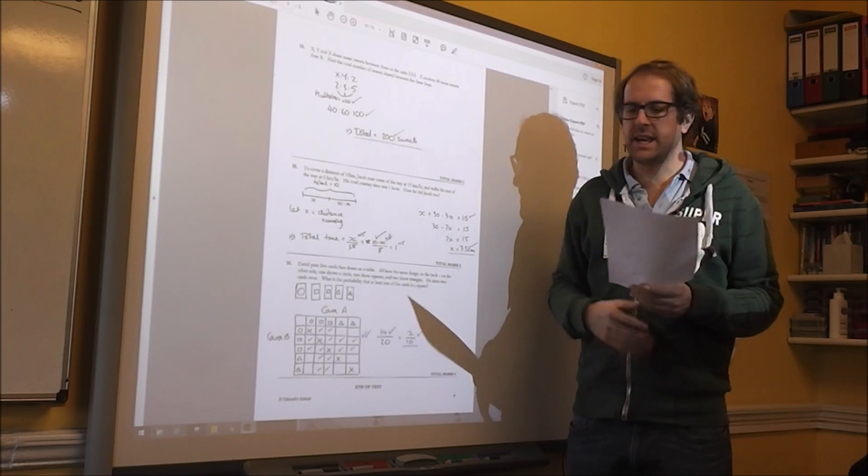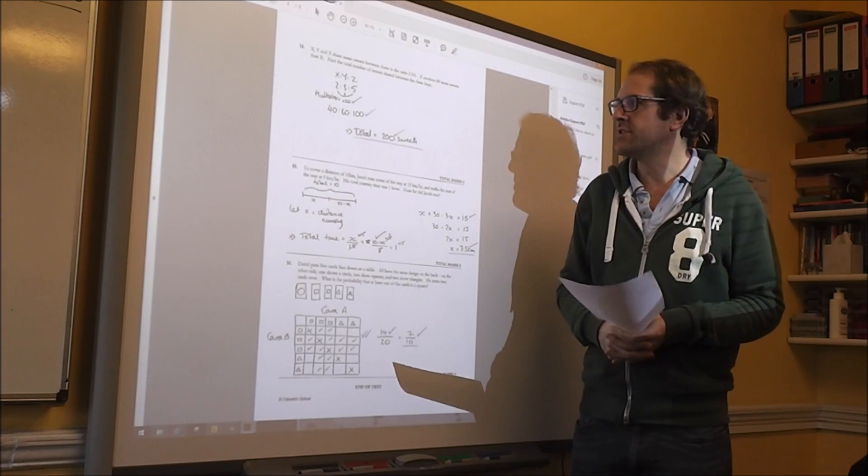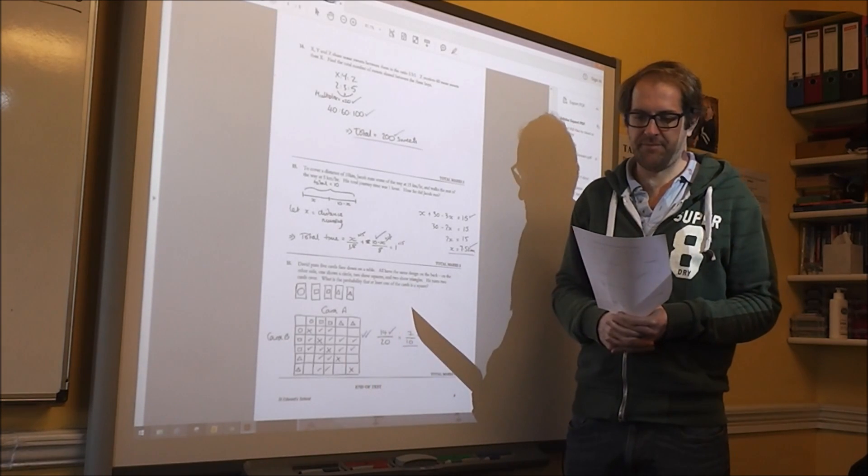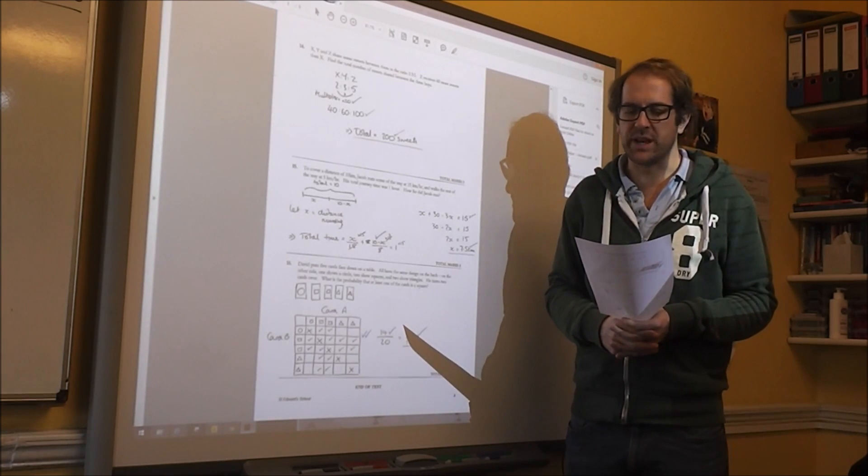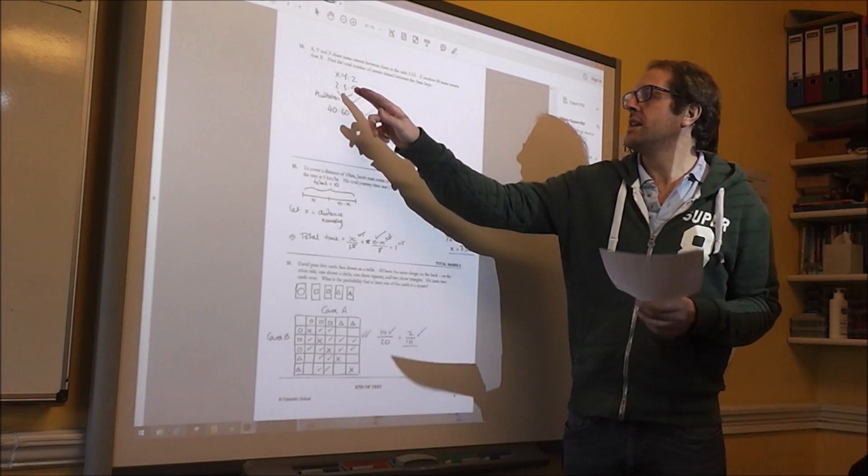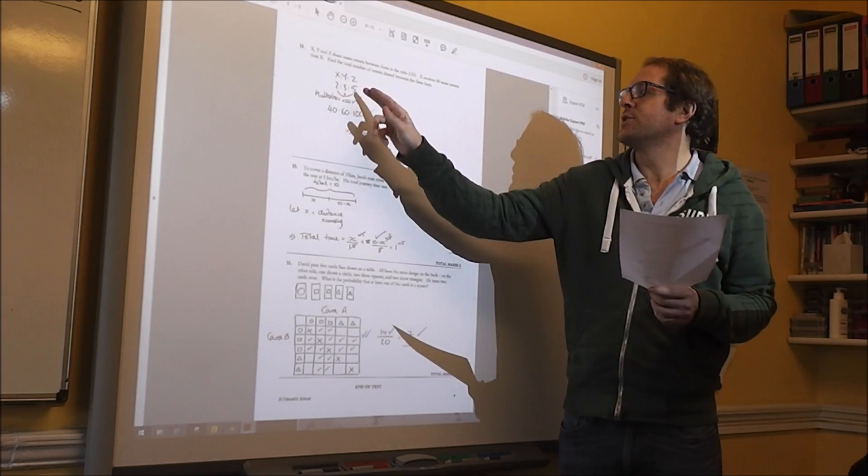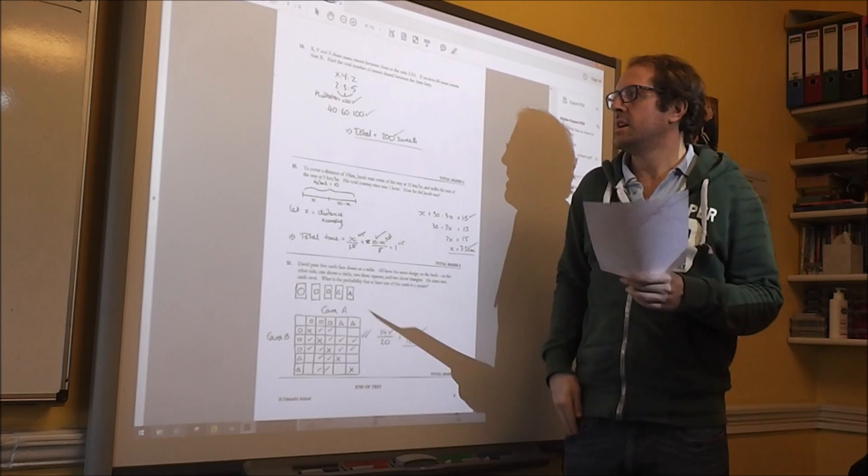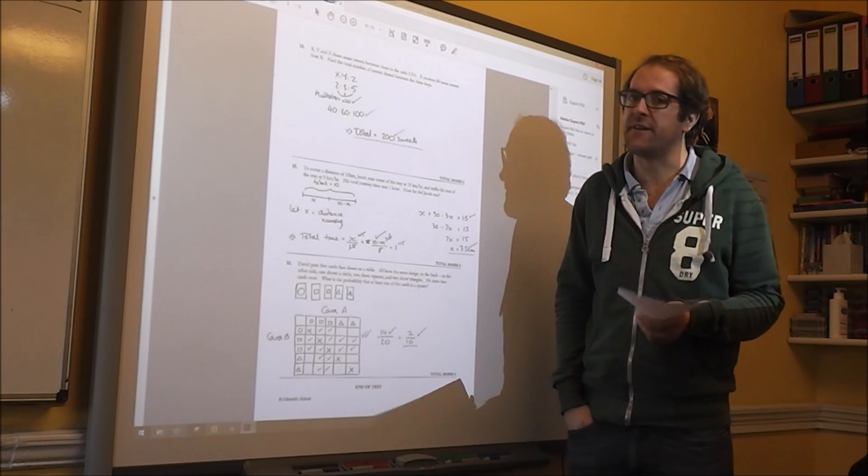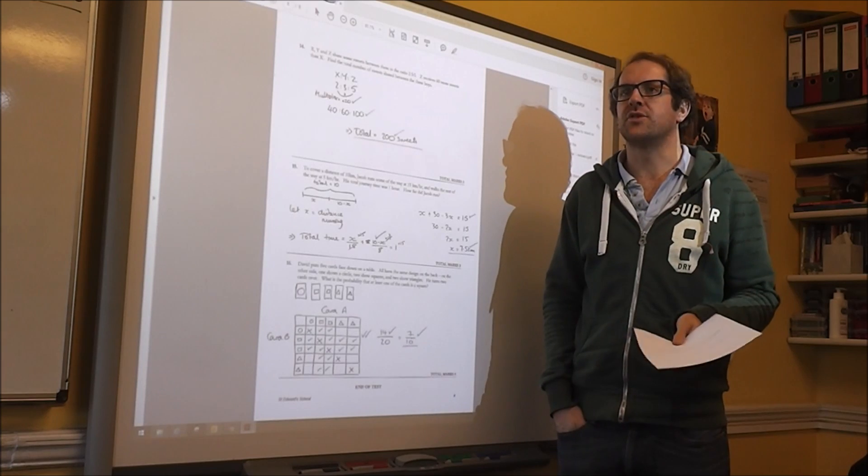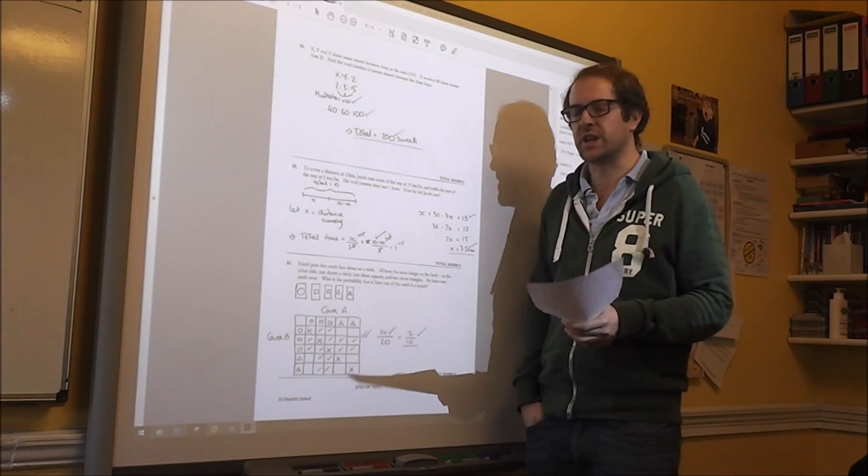Number 14 is a nice little ratio question. Shares with a ratio of 2 to 3 to 5. Z receives 60 more sweets than X. So at the moment they've got a difference of 2, sorry 3, the difference is 3. So your multiplier for your ratio is 20, because 3 times 20 gives the difference of 60. So if you multiply all of them by 20, you get 40, 60, 100.